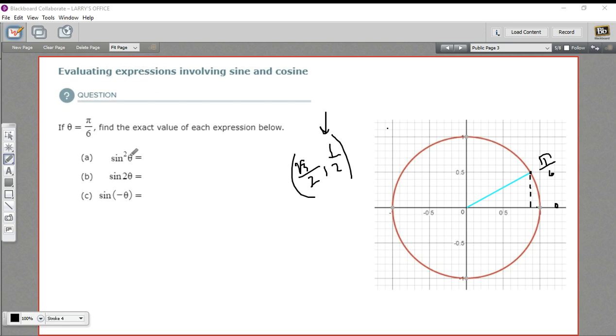The first one here is sine squared of theta. To do sine squared of theta, you find the sine of theta and you square it. So this is just 1 half squared. And that is 1 fourth.